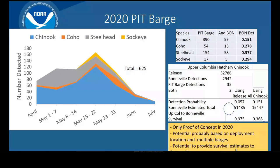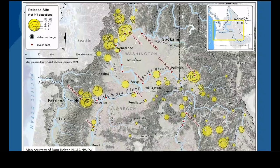The best thing about this dataset is that even though we only had 625 total detections, those came from all over the Columbia basin — fish are released in many places around the basin. We saw them pass through this detector down below Bonneville, near Portland. If we increase the numbers, we're going to start seeing lots of fish from lots of places, and that's really the kind of data we want to see going forward.